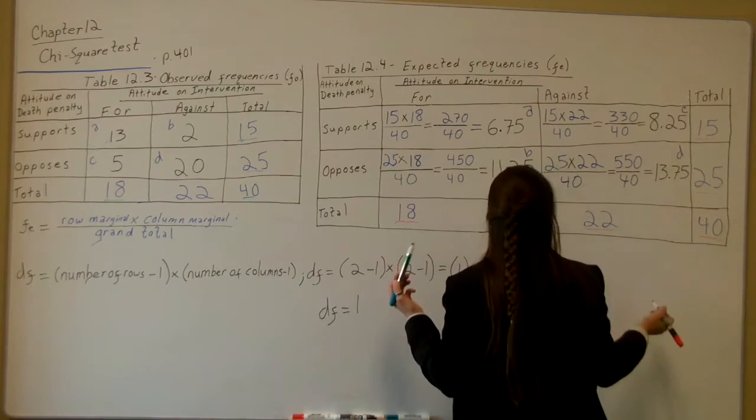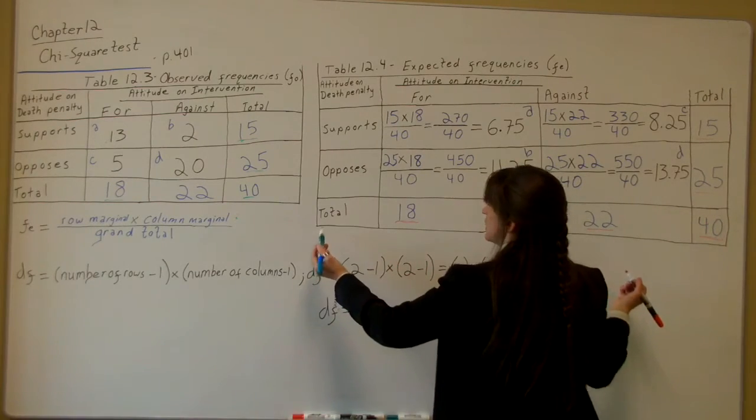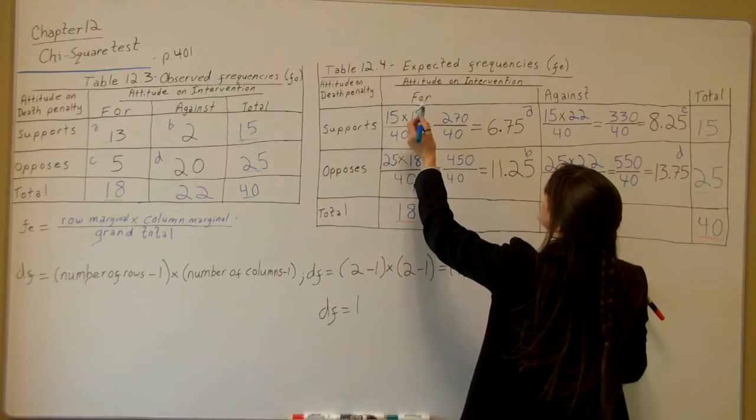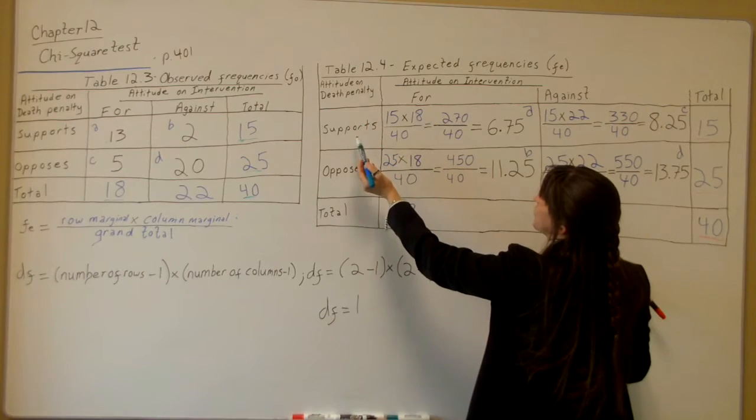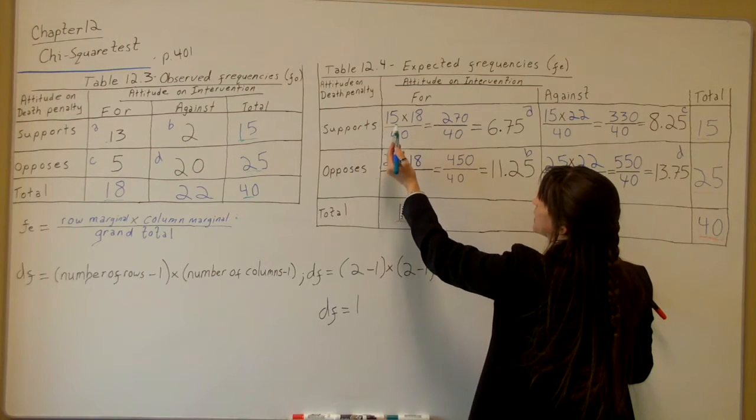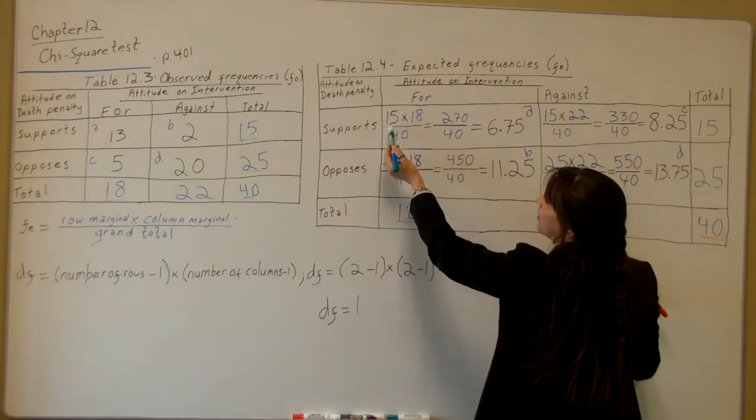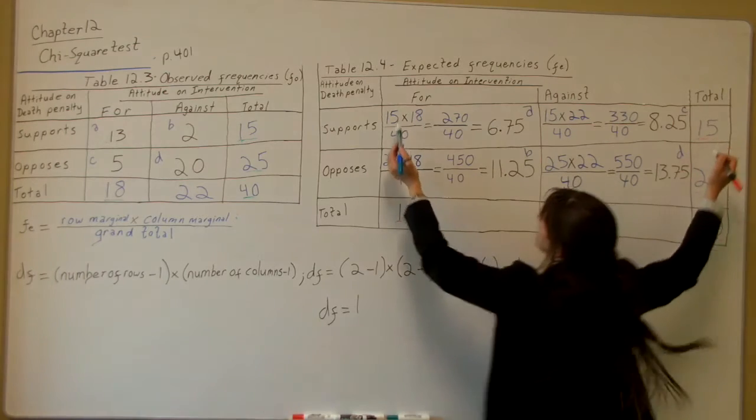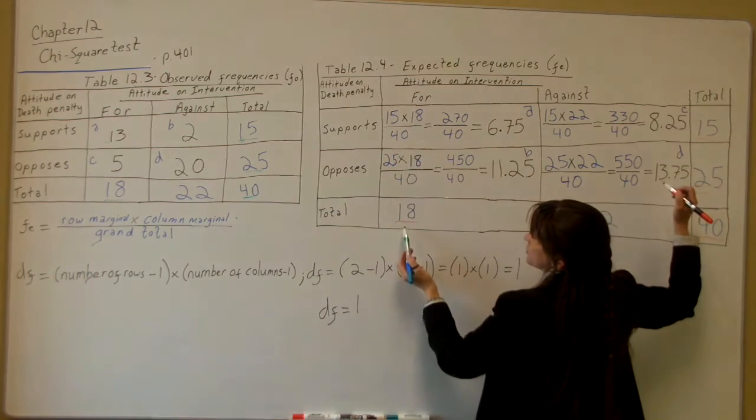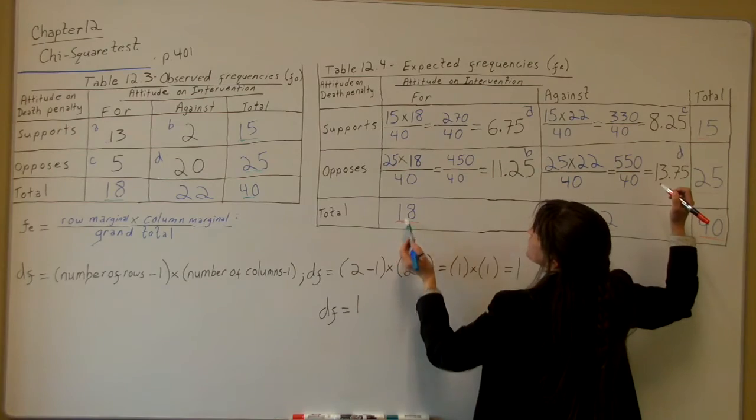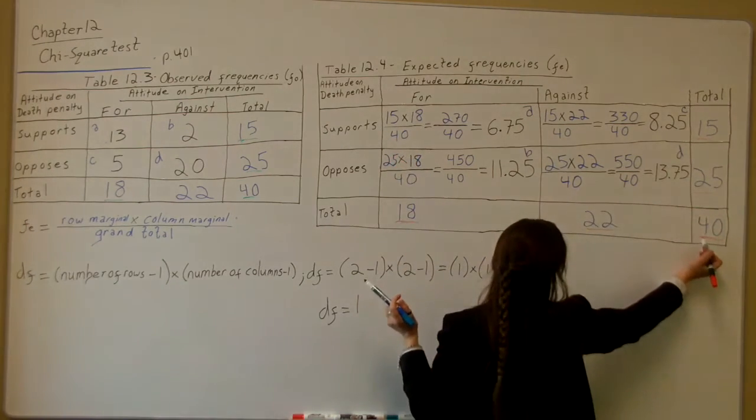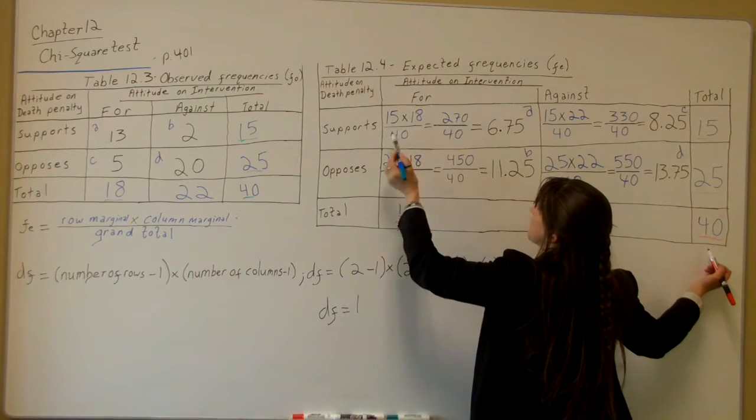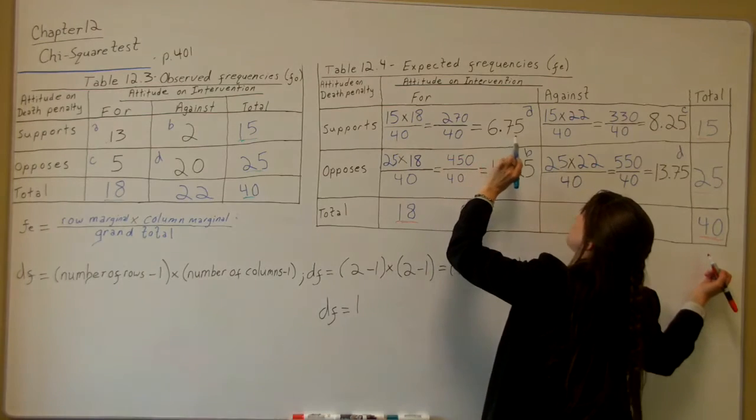Your grand total is this little 40 number in the corner. It's the grand total of like the rows and the columns there. So let's look here. Here we have, for the first one, attitude on intervention therefore and attitude on death penalty support, it's in your A block. See the little A? What it is, it's your row marginal, which is 15 times your column marginal, which is like a column marginal total is 18 over 40, which is your grand total on the corner. So first, 15 times 18 equals 270 divided by 40 equals 6.75.